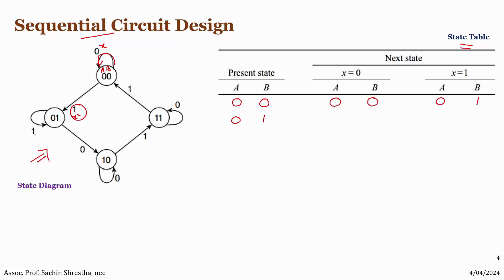For state 01, when input X equals zero, it changes from 01 to 10. When input X is one, the state changes from 01 to 01 — there is no change in state.